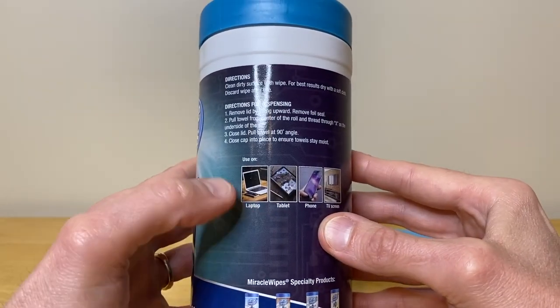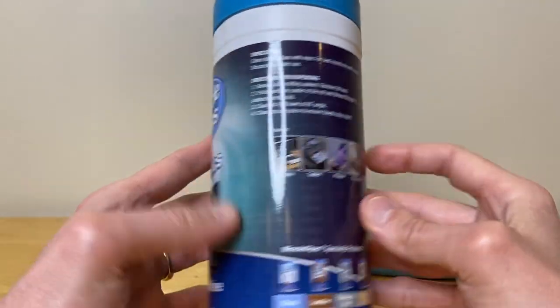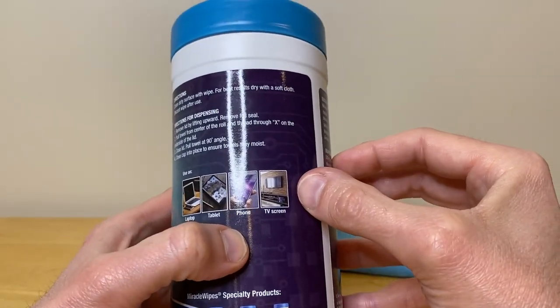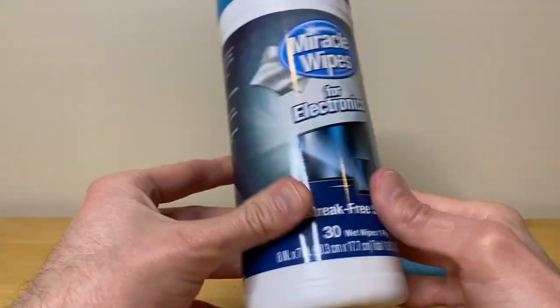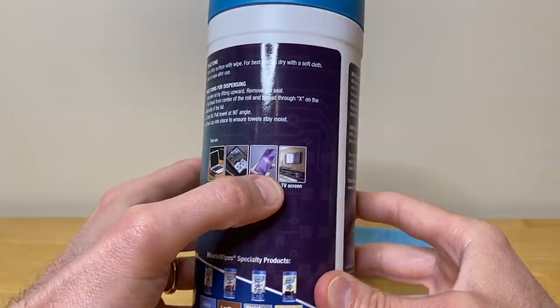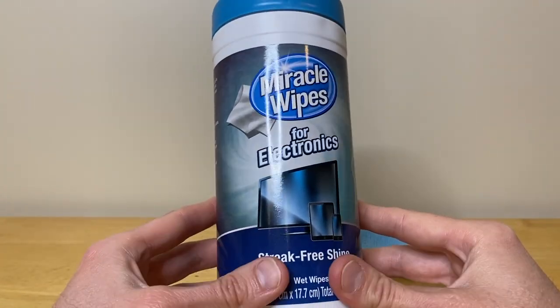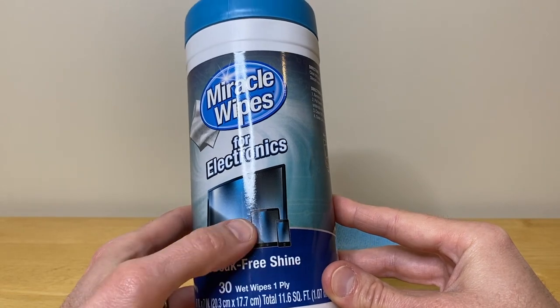And again, what we'll do in this video is we will use these Miracle Wipes on a laptop and a tablet, and maybe a phone too. However, scrolling above, we actually have a separate video showing the use of these wipes on a 55-inch Samsung TV. So definitely check that out to get any and all smudges off your TV screen for that shiny finish. What we'll do now is go get a computer, tablet, and phone.